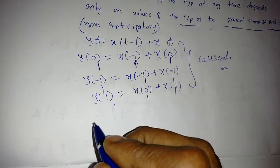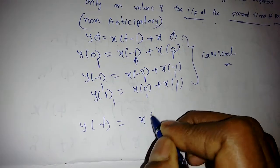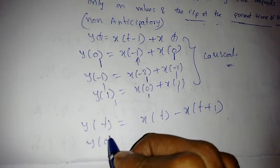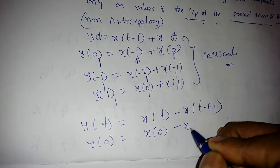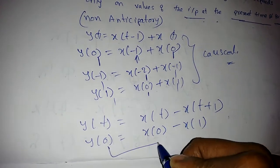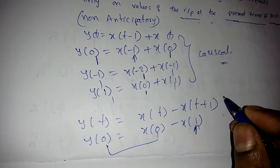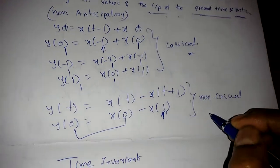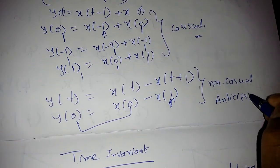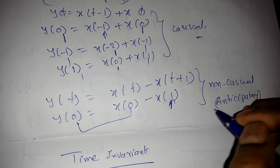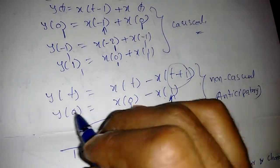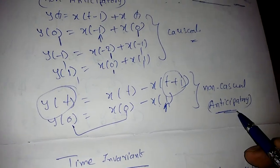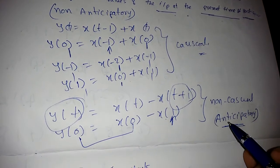Consider another example: y(t) = x(t) - x(t+1). Substituting t=0: y(0) = x(0) - x(1). Here x(0) is the present value but x(1) is a future value of the input. So we can say it is non-causal, or we can say it is an anticipatory system — meaning we are using future values of the input to find the present value of the output.